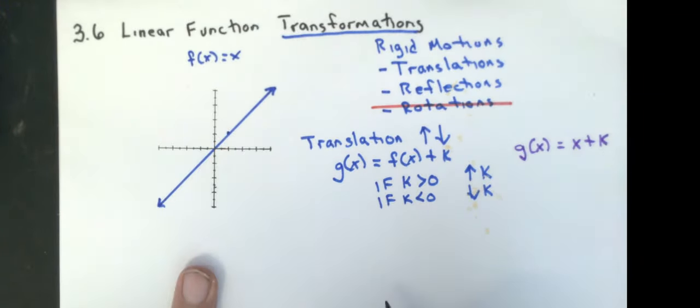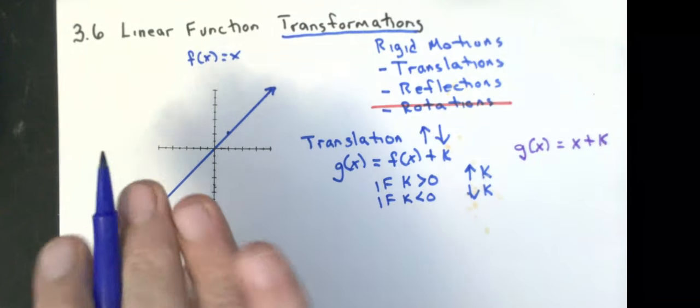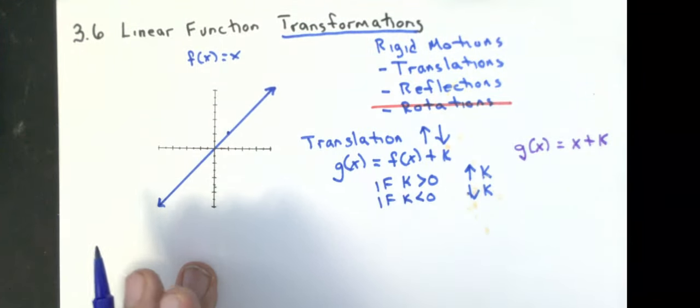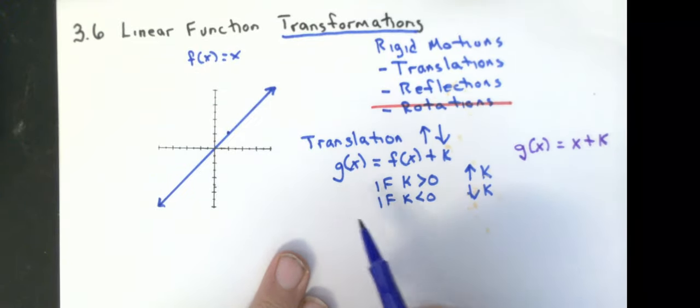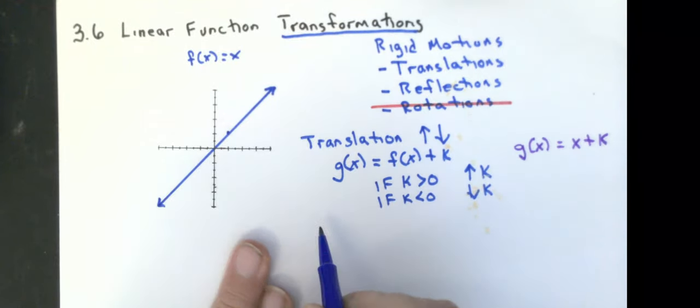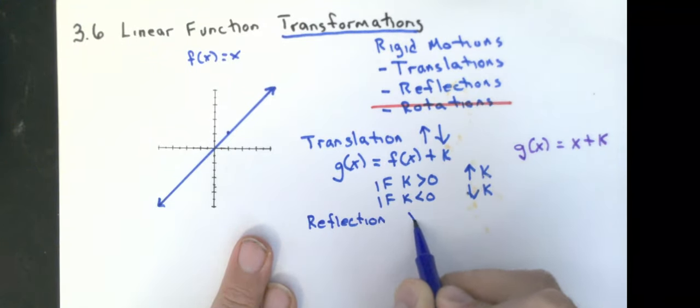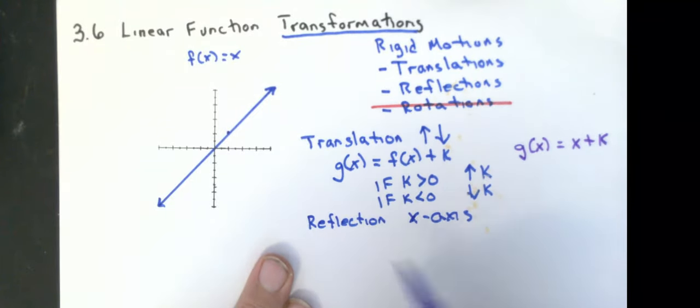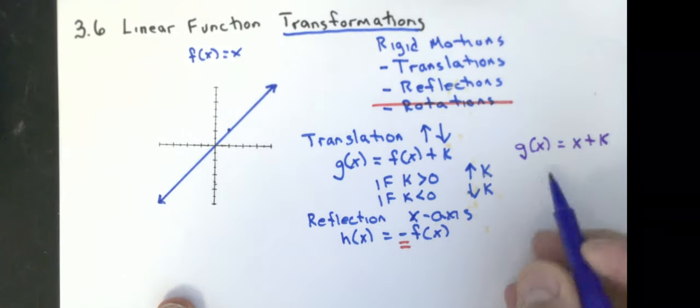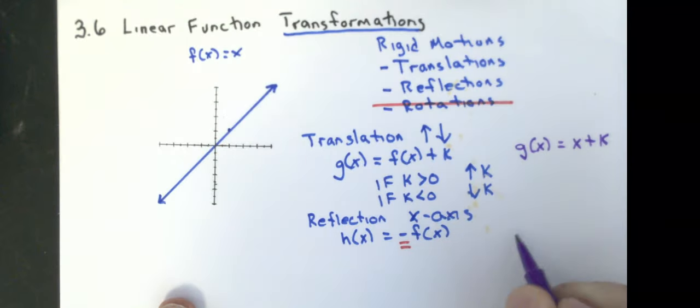The other thing we have was we have a reflection. And for our purposes during the first semester this year, we're only going to talk about reflections across the x-axis. A reflection across the x-axis would be h(x) = -f(x), that right here, this negative sign right here, I want to write it using my original function, h(x) = -x.